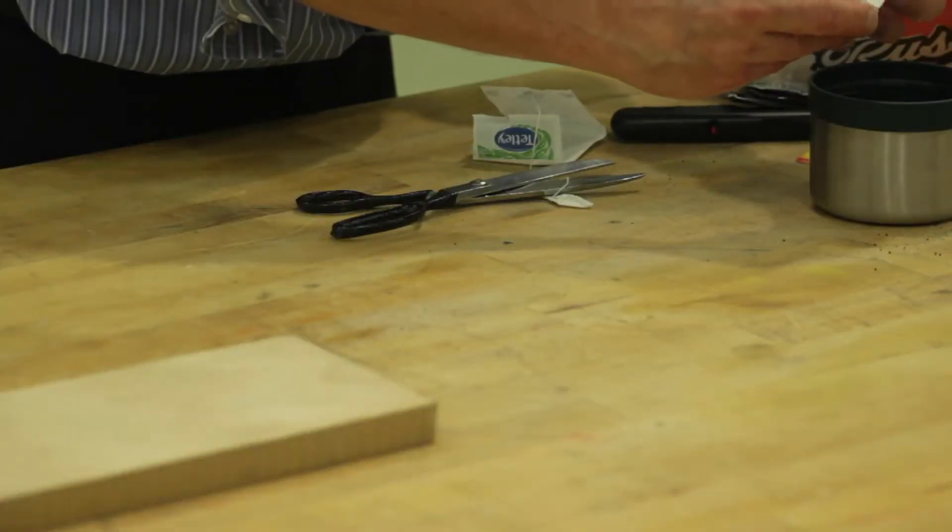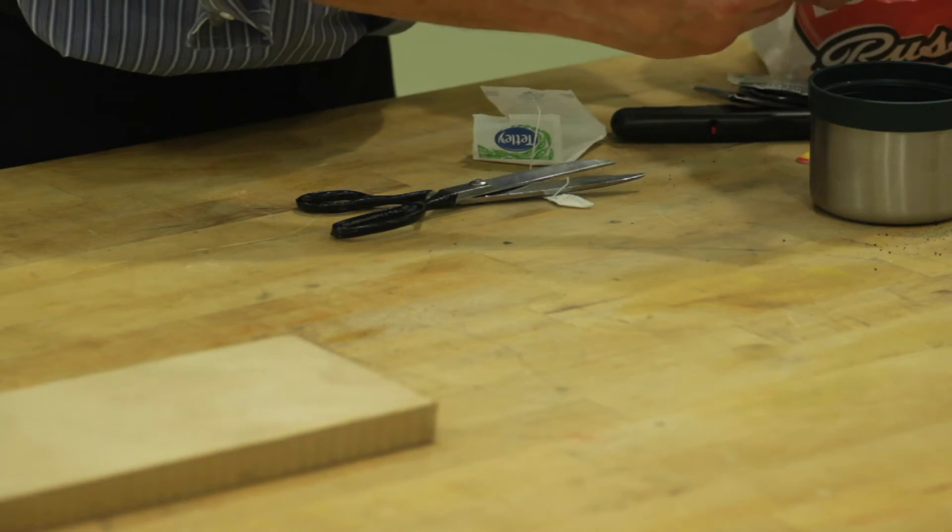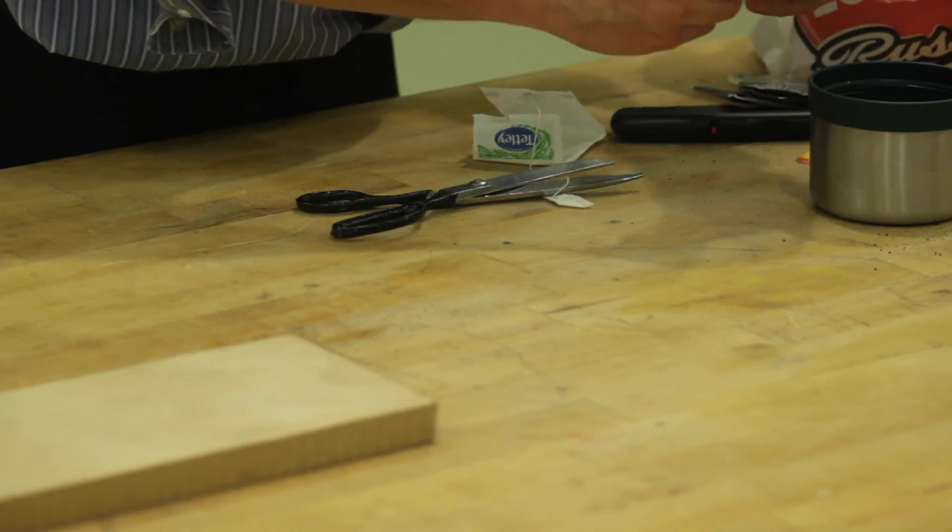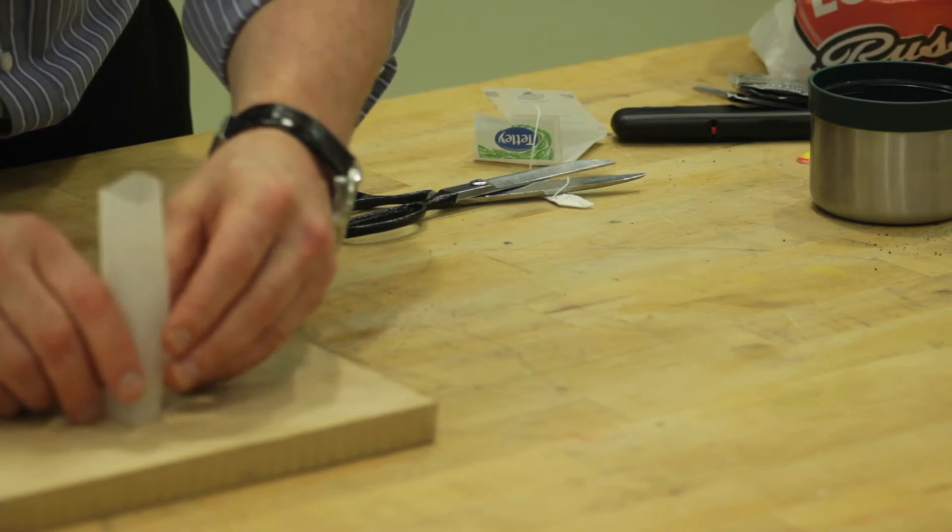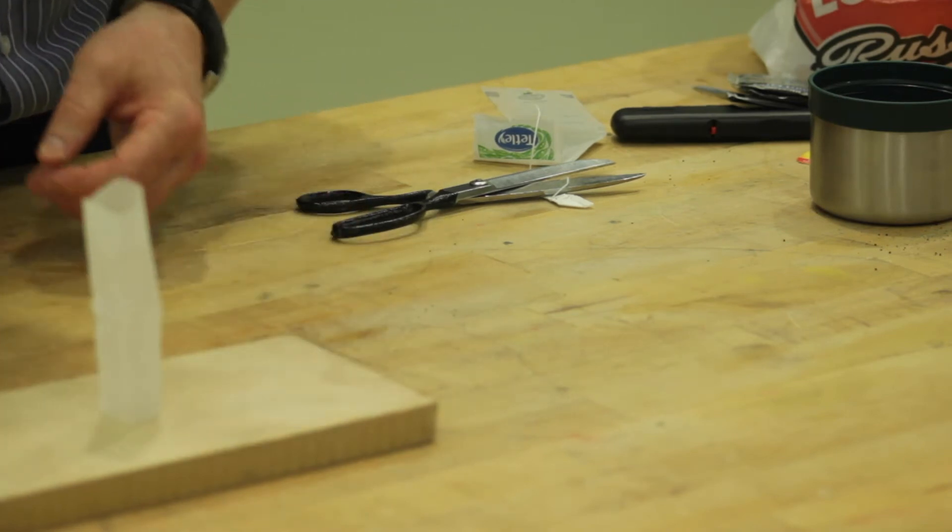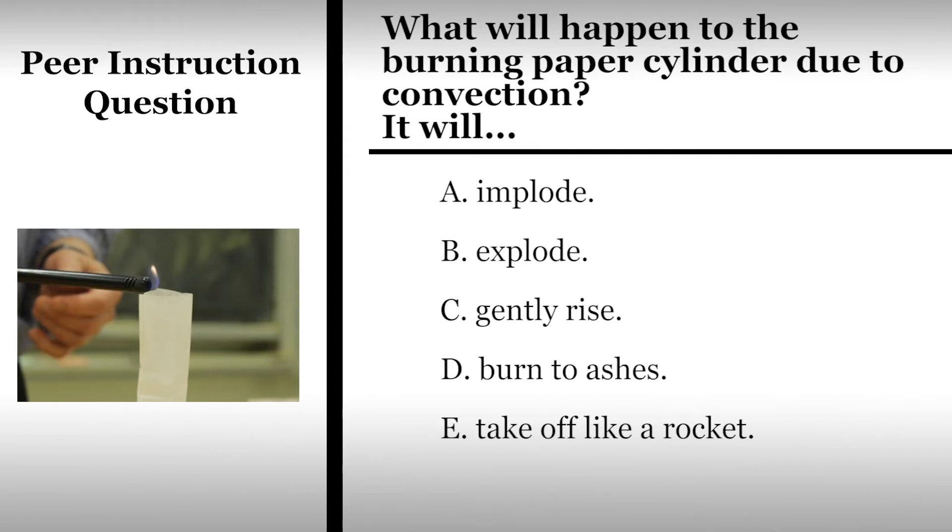Let's look at a fun example of convection commonly used today in physics classes known as a tea bag rocket. We basically steal the paper cylinder that encloses the tea and use it to display convection. We are going to light the top of the paper cylinder on fire. Let's see if we can predict what will happen.